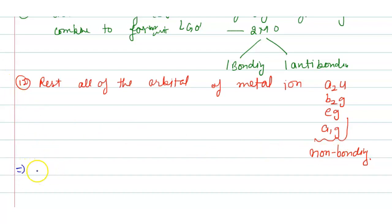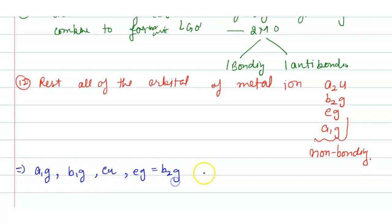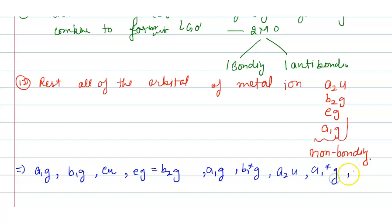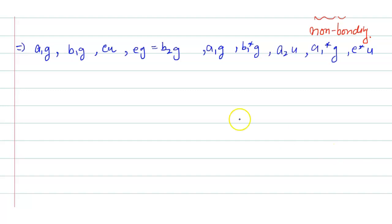The LGOs involved in the square planar complex are: a1g, b1g, eu, and eg (equal to b2g). The resulting molecular orbitals are a1g, b1g, eu, b1g*, a1g*, and eu*. Now we will draw the molecular orbital diagram for the square planar complex.